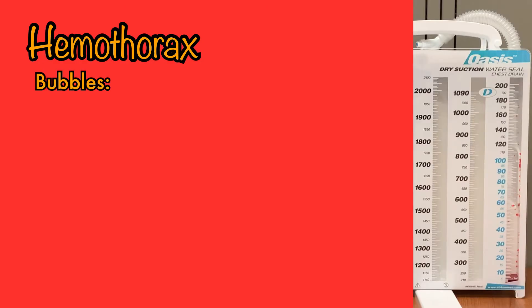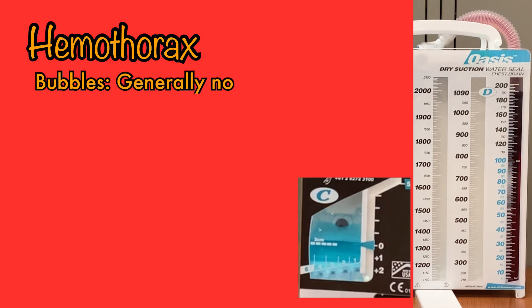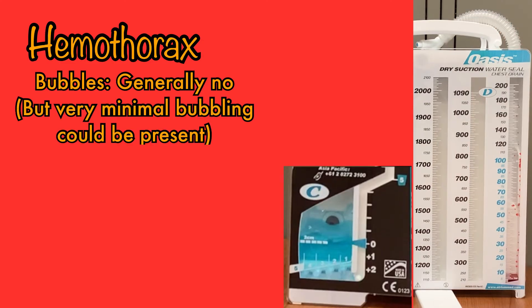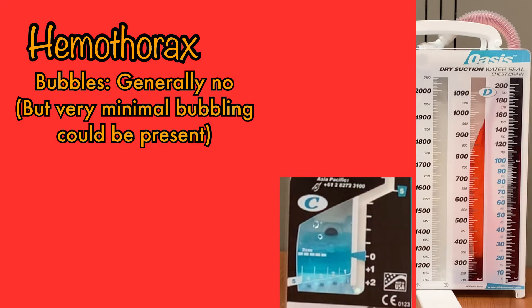What if the chest tube was placed for a hemothorax? Would you expect to see bubbling? A hemothorax occurs when blood is present in the pleural space, so you shouldn't really see much bubbling in the chamber if you're pulling fluid and not air. But you may see a little bubbling in the beginning. Sometimes when placing a chest tube, a small amount of air makes its way into the pleural space, and as it is pulled out along with the blood, it will create bubbles. But that should not last long, and if bubbles start to develop later in the course of treatment, that is cause for concern and the physician should be contacted.